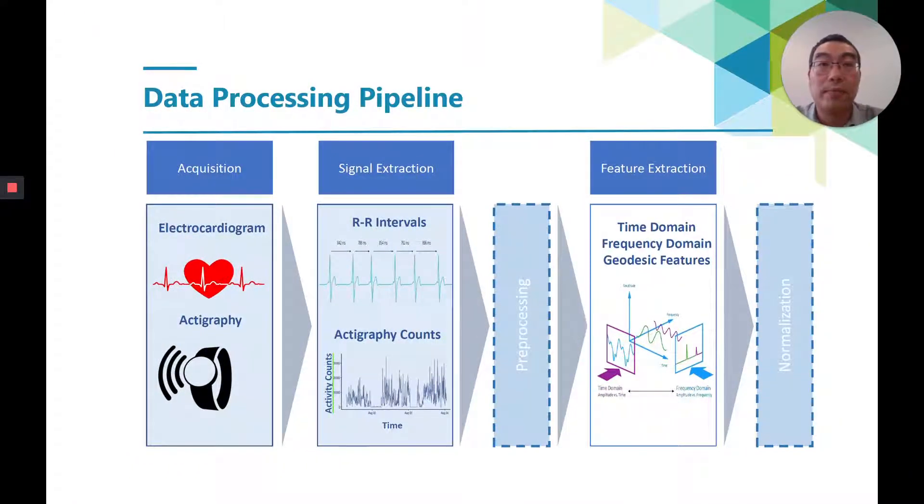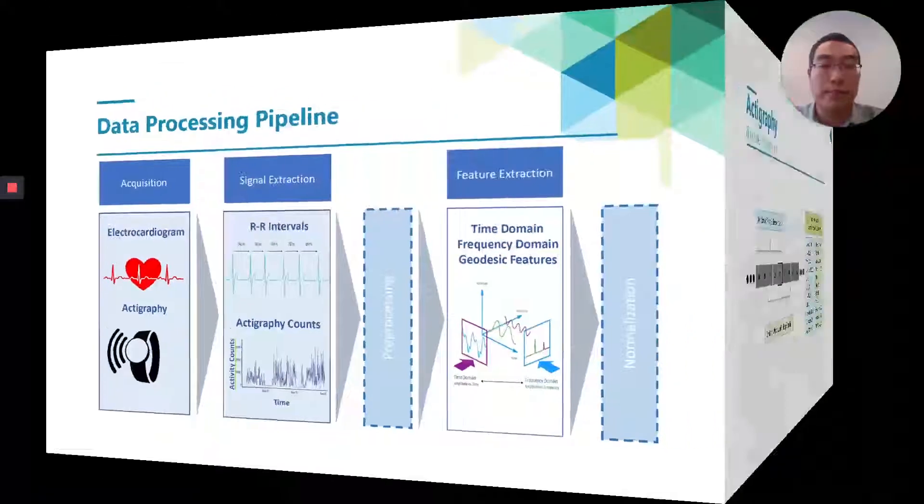Here's the data processing pipeline. We first extracted the RR intervals and activity counts from ECG and Actigraph equipment. We then aligned them by their time steps and filtered out the missing signals. After we processed the data, we extracted the statistic features for activity counts, and then we extracted the HRV features from normal to normal intervals.